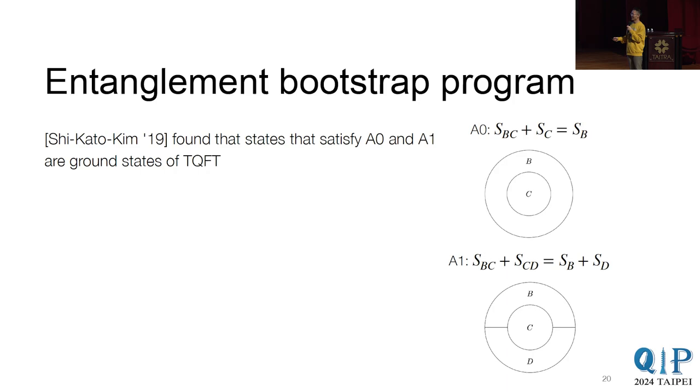And in fact, people have succeeded in doing so. And so this is called the Entanglement Bootstrap Program. So in 2019, Shi, Kato, and Kim, they found these conditions A0 and A1. So what this means is that, okay, again, you take a ground state, and you cut out a disk, and then you cut into these sub-regions. So now you compute the entropies of these sub-regions, and then check these conditions on all disks. If they're satisfied, then that's a TQFT ground state.